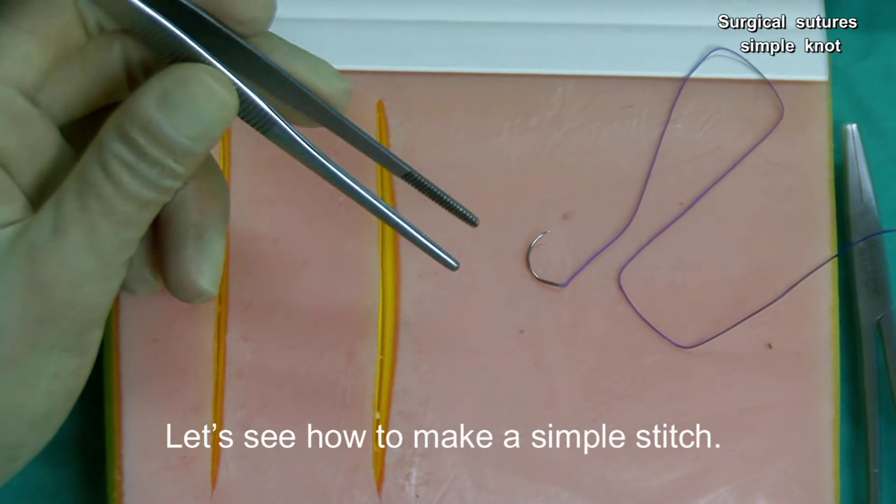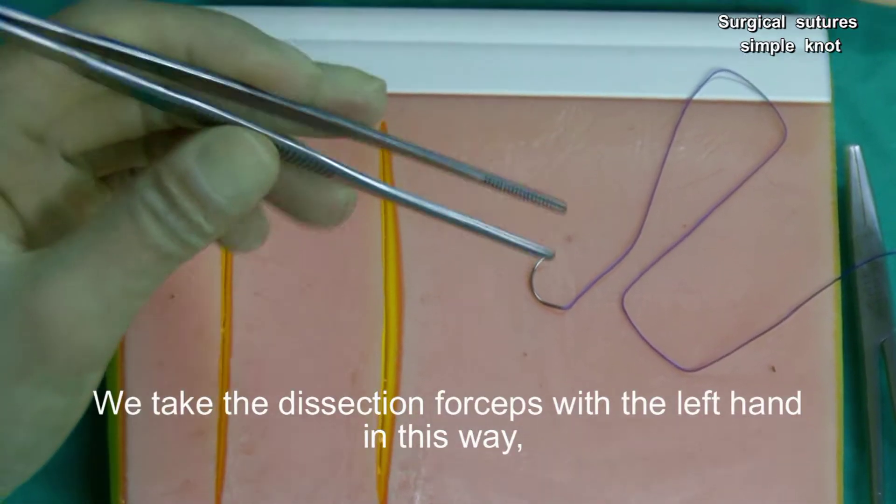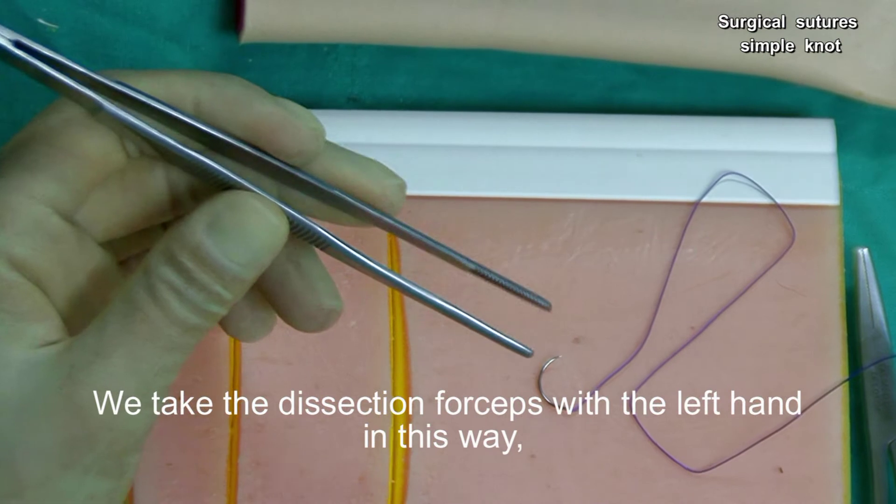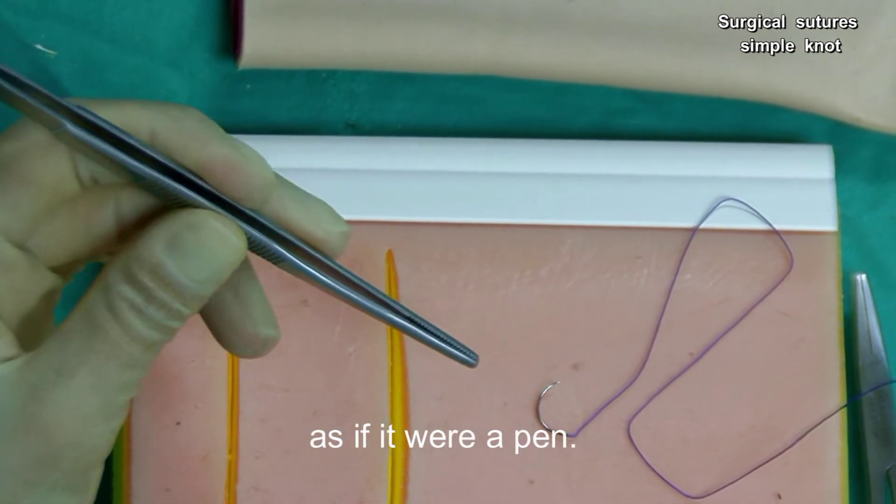Let's see how to make a simple stitch. We take the dissection forceps with the left hand in this way, as if it were a pen.